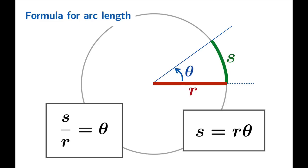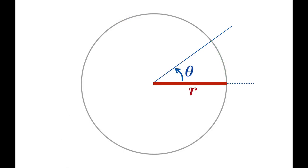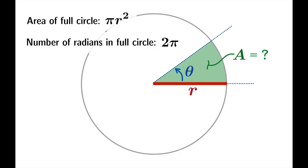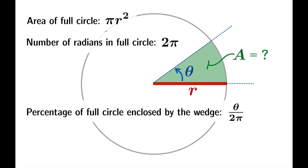Let's talk about area. Suppose we were interested in calculating the area of this wedge. We know the area of a full circle is πr², and we know the number of radians in a full circle is 2π. So the percentage of a full circle enclosed by the wedge should be the ratio of θ over 2π. That means the area of the wedge would be the percentage of the circle multiplied by the area of the whole circle, which simplifies to ½r²θ.